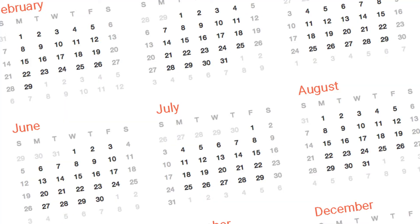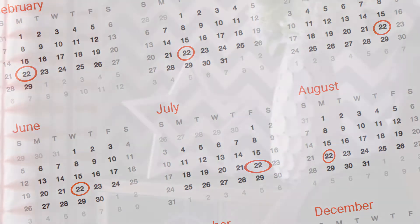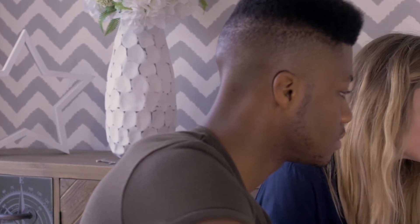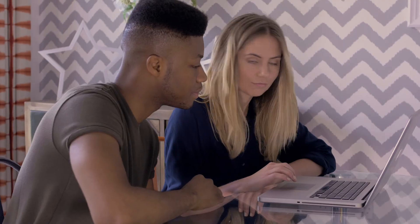Universal Credit will be paid to you once a month in arrears. The day you are paid will depend on the date you claim.